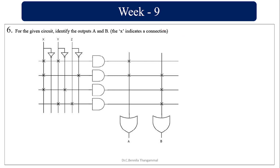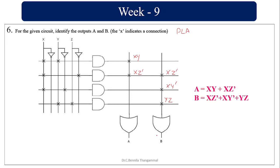Here a PLA circuit is given — programmable AND as well as programmable OR. The product terms are: XY, XZ̄, XȲ, and YZ. So output A is XY + XZ̄, and output B is XZ̄ + XȲ + YZ.